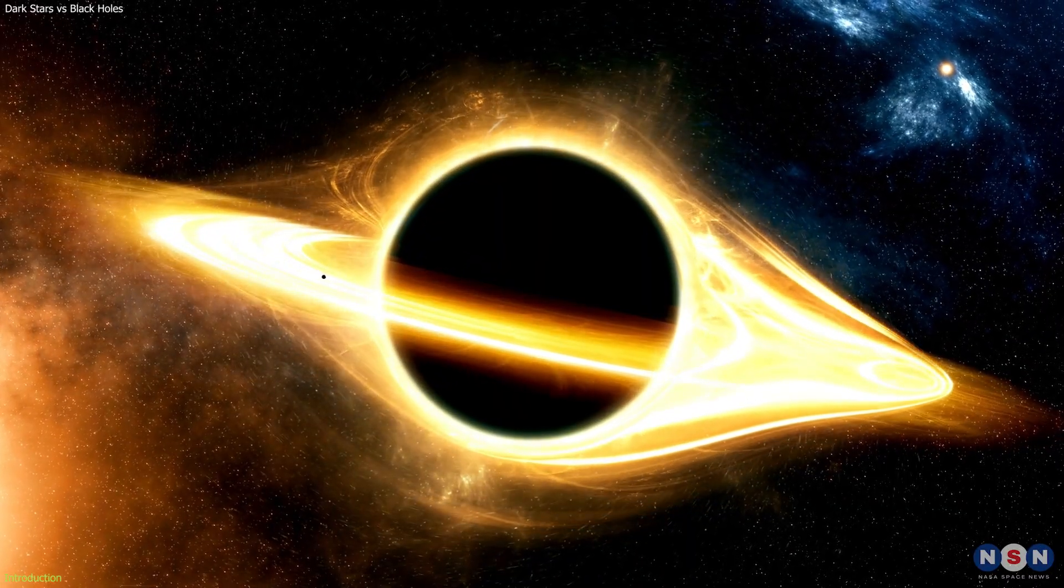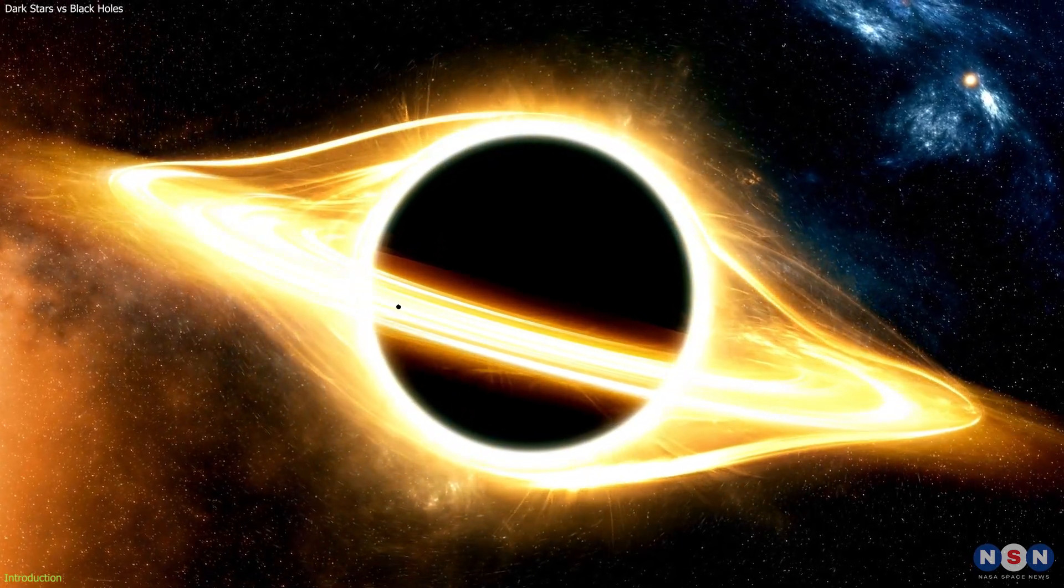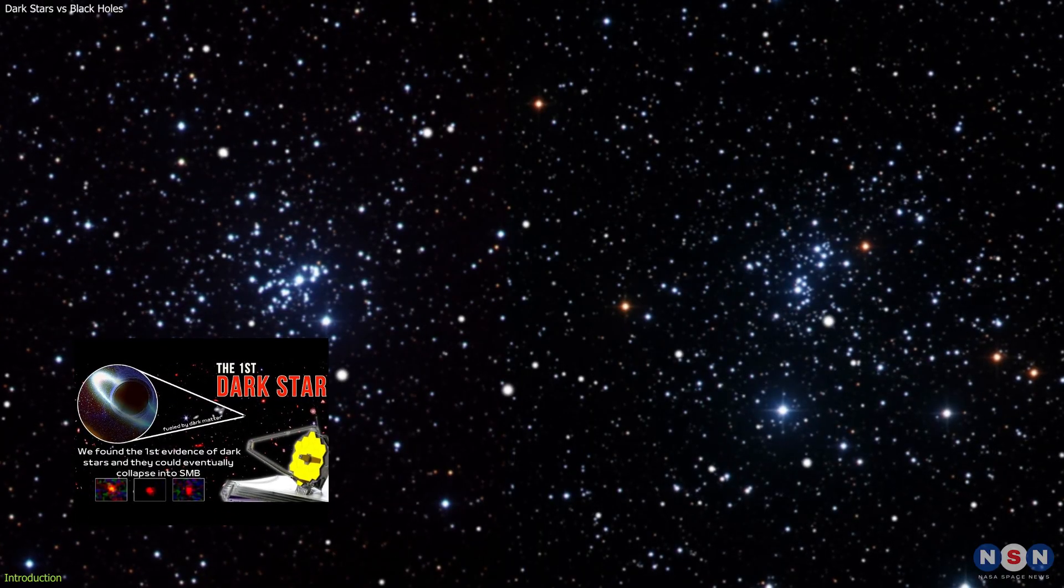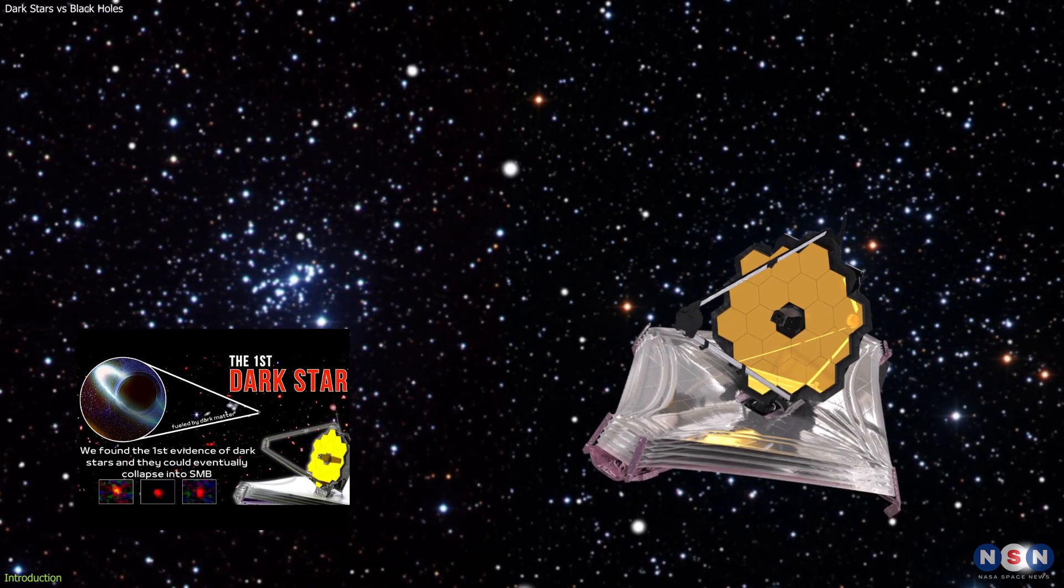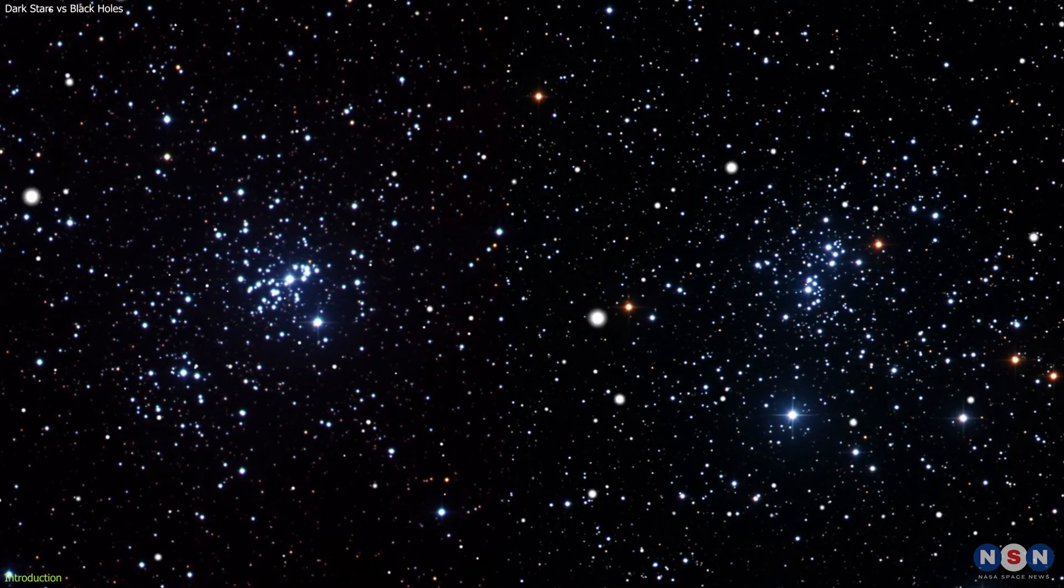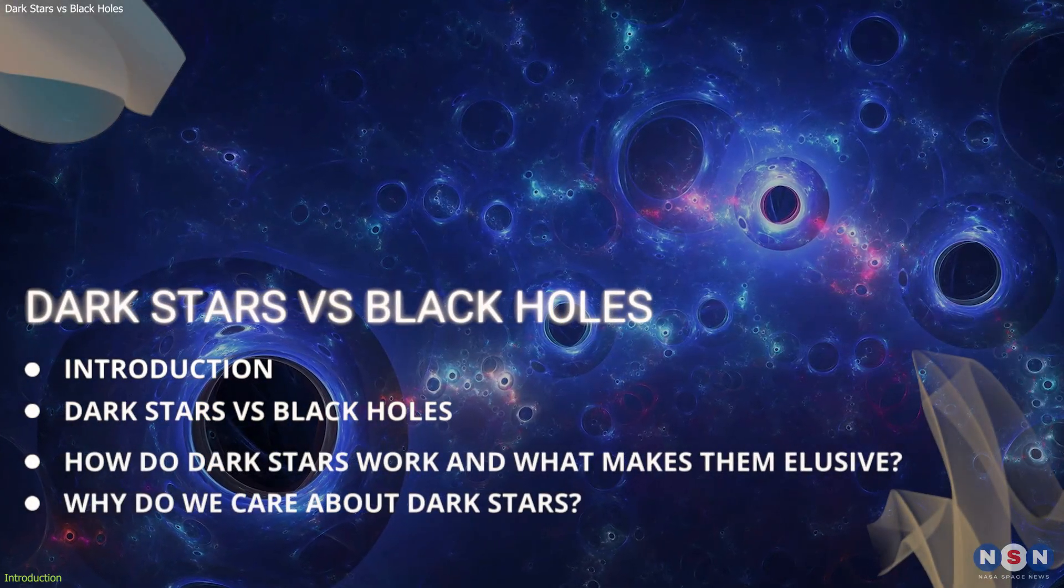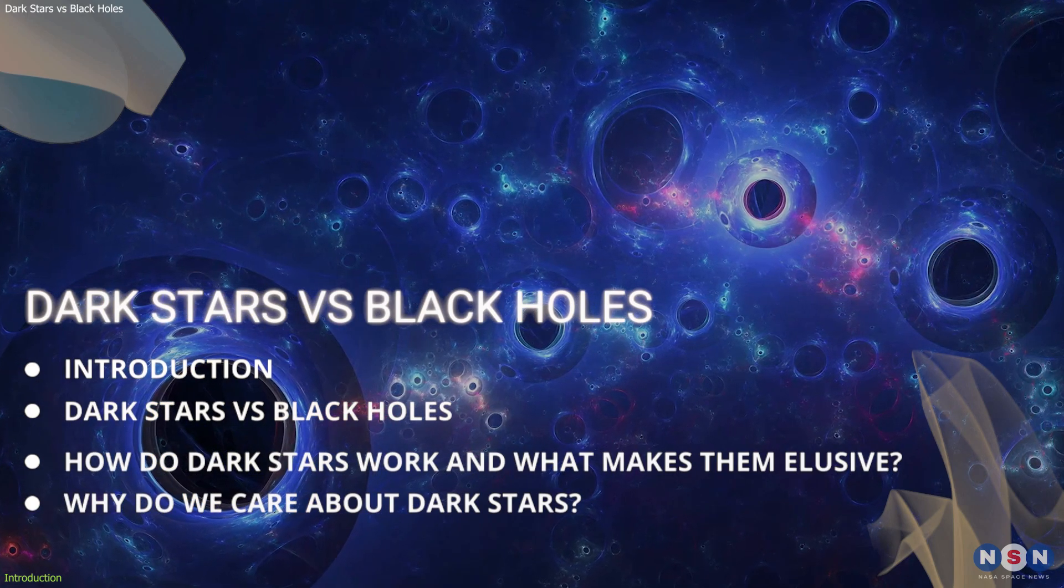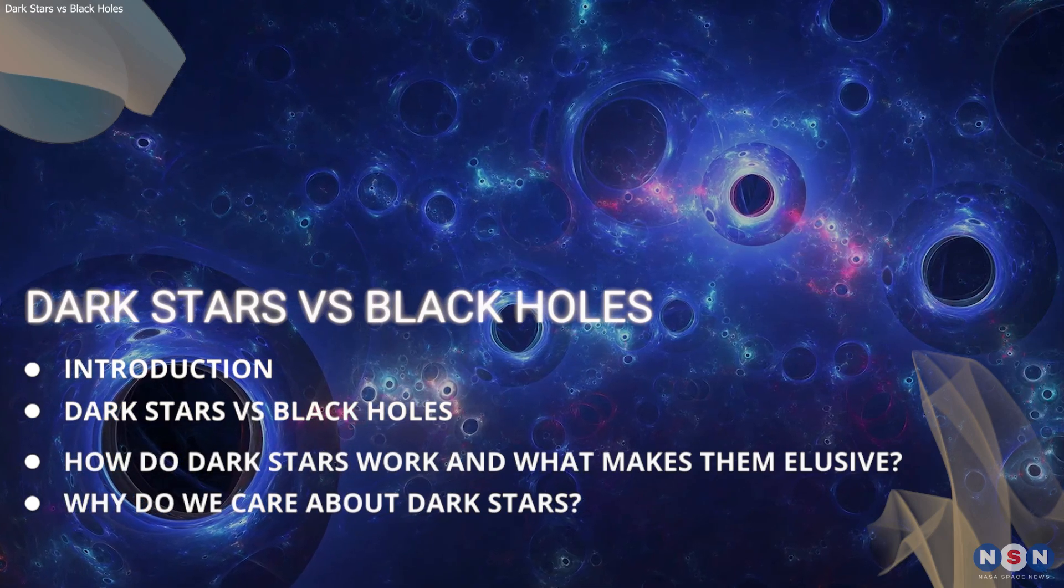These are not science fiction scenarios. These are two of the most extreme and mysterious objects in the universe—black holes and dark stars. In a previous episode, we covered this news story where scientists claimed they found dark stars using the James Webb Telescope. Based on your feedback on that video, we decided to make this episode, in which we will explore three main topics—why people are confused between dark stars and black holes, what the structure and properties of dark stars are, and why we study these objects.